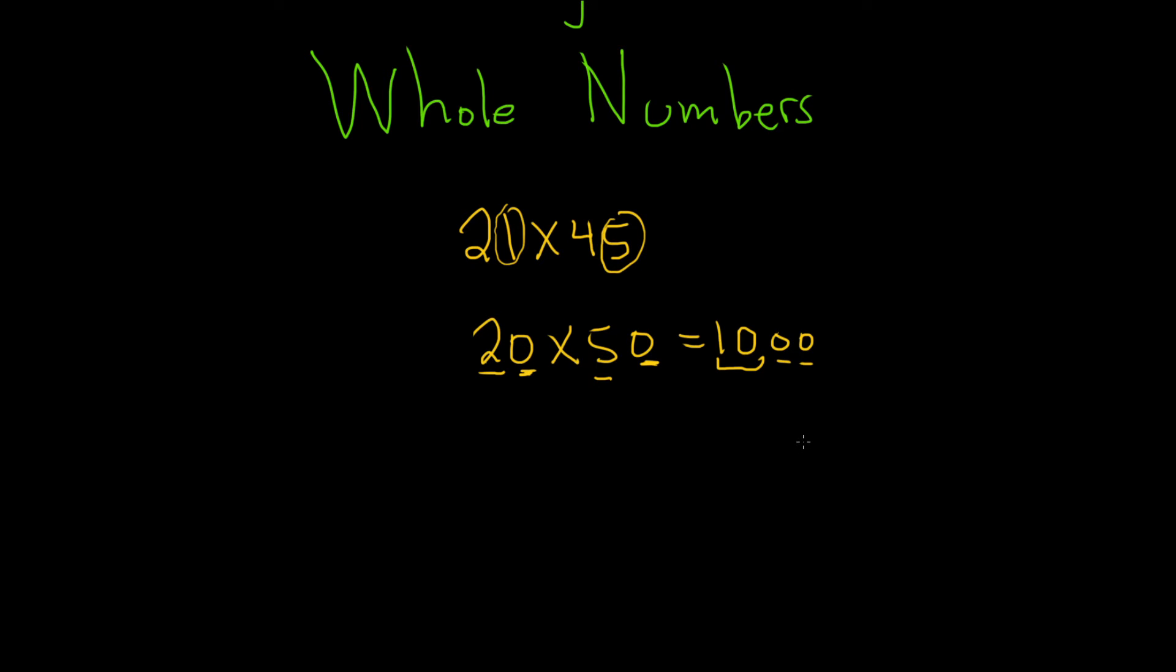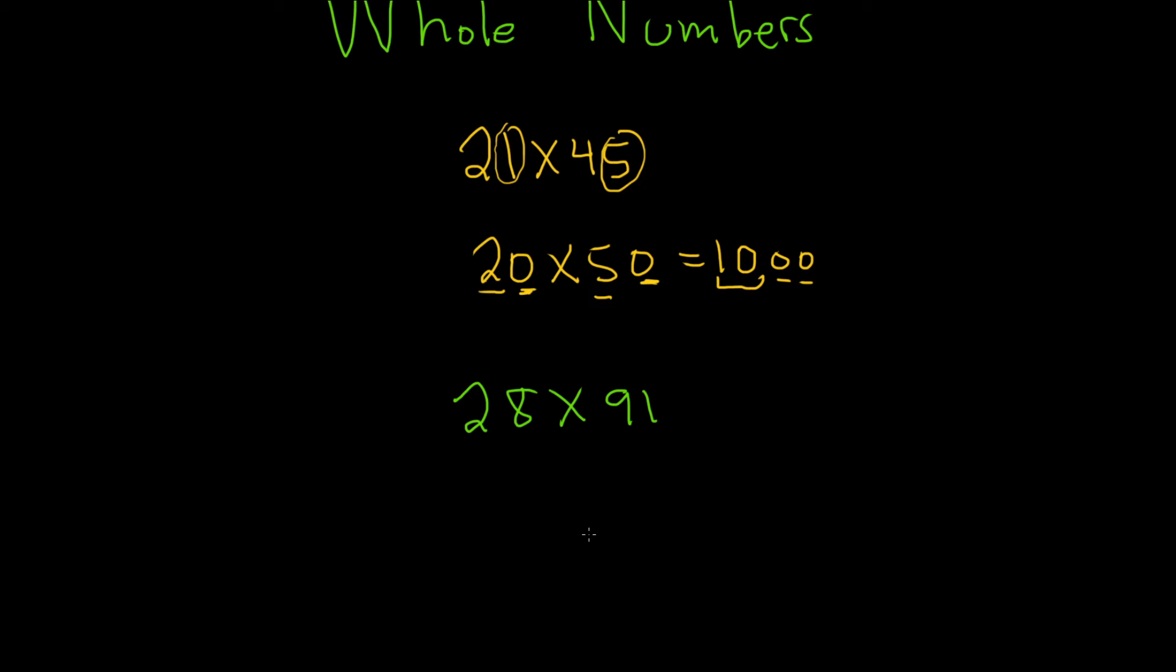Let's do another one. Say we have 28 times 91. So in this case, because of the 8, the 28 will round up to 30. And because of the 1 here, the 91 will round down to 90.